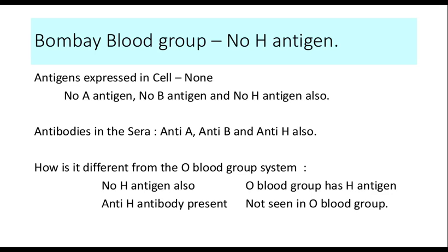Because none of these antigens are present, the antibodies in the sera will include anti-A, anti-B, and anti-H also. How is the Bombay blood group different from the O blood group? In the Bombay blood group, we do not have the H antigen. In the O blood group, we have the H antigen. Because the H antigen is not present in the Bombay blood group, they have anti-H antibodies present, which is not present in the O blood group.